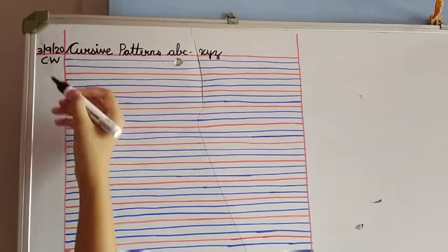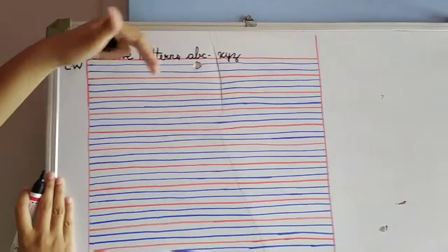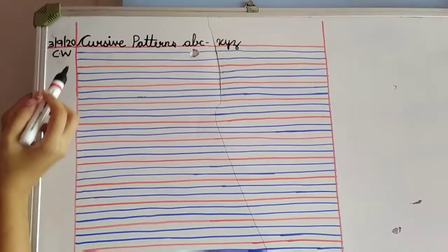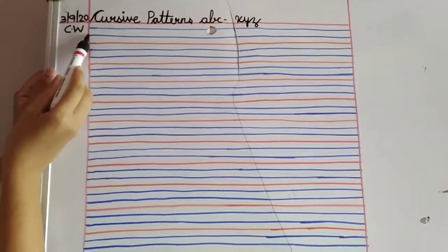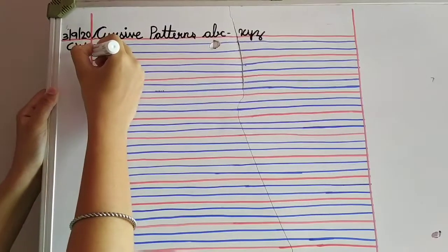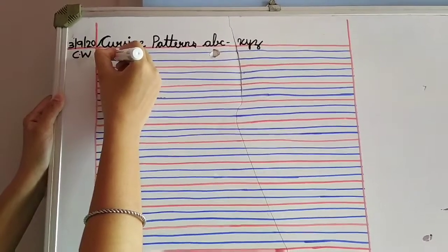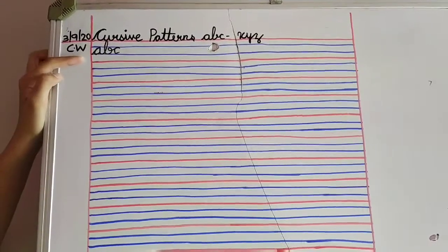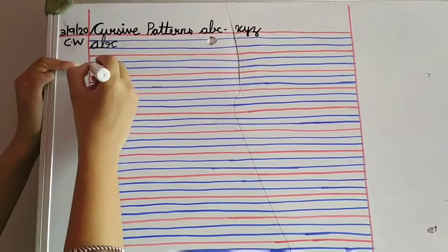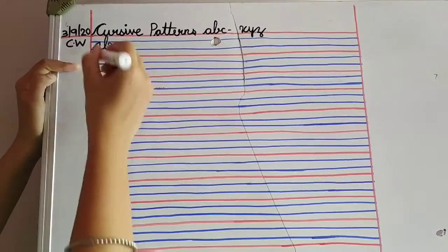So, now let's write. First you will write the title cursive patterns ABC to XYZ. Today is date and C-W. So, let's write. Start joining the margin line, second blue line. We will write ABC. A, B, C. But you are not going to leave your hand. You have to write it continuously, and touching the margin line only. So, let's write.